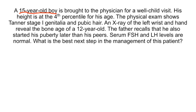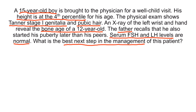A 15-year-old boy is brought to the physician for a well-child visit. His height is at the 4th percentile for his age. The physical exam shows Tanner stage 1 genitalia and pubic hair. An x-ray of the left wrist and hand reveals the bone age of a 12-year-old. The father recalls that he also started puberty later than his peers. Serum FSH and LH levels are normal. This presentation is consistent with delay of growth and puberty. Since his serum FSH and LH levels are normal and his father also has a history of delayed puberty, this patient's diagnosis is most likely constitutional delay of growth and puberty. The best next step in management would be reassurance, because he will likely achieve adult height and normal secondary sex characteristics.